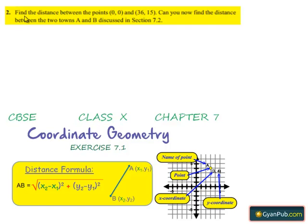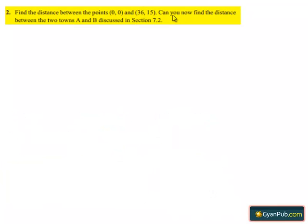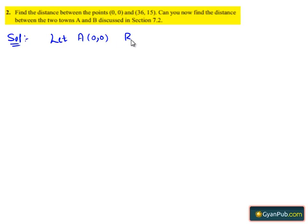Coming to question number 2: find the distance between the points (0, 0) and (36, 15). Can you now find the distance between the two towns A and B discussed in section 7.2? Moving on to the solution, let the given points be A(0, 0) and B(36, 15).